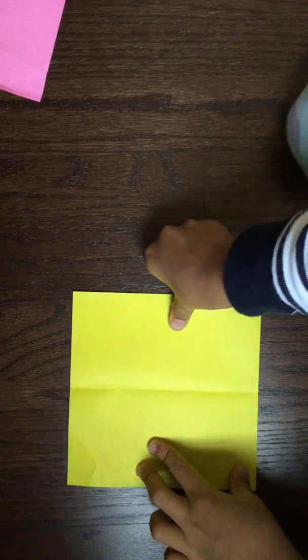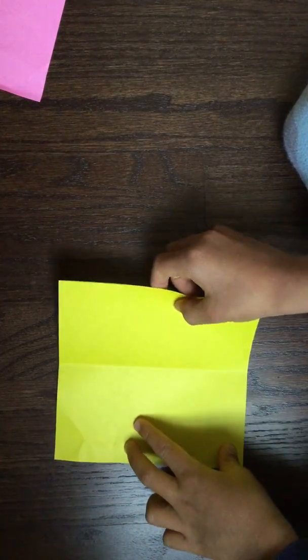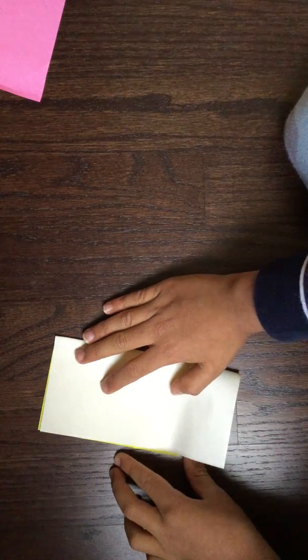Hi guys, we're going to be making an origami ninja star. So first, fold the paper in half.